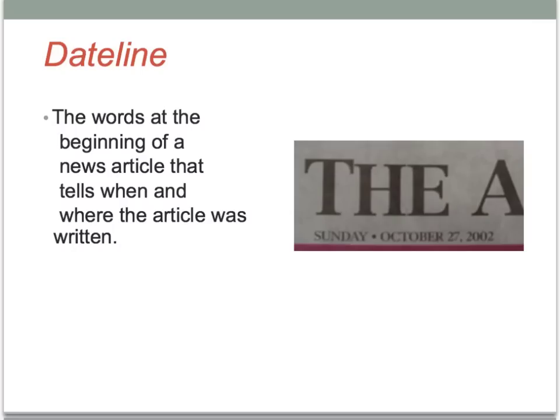The dateline — these are the words at the beginning of a news article that tell when and where the article was written. You'll need to find a historic date set around the era that you're doing your newspaper in, even though the whole newspaper will encompass more than one year.